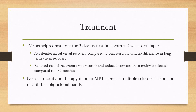The treatment is IV steroids, specifically methylprednisolone, for three days followed by an oral taper. IV formulation over oral steroids has the advantage of accelerating initial visual recovery, although there is no difference in long-term visual recovery. It does reduce the risk of recurrent optic neuritis and conversion to multiple sclerosis. Disease-modifying therapy can be started if the brain MRI suggests MS lesions or if the CSF has oligoclonal bands — essentially if there is a high-risk clinically isolated syndrome or a diagnosis of multiple sclerosis.